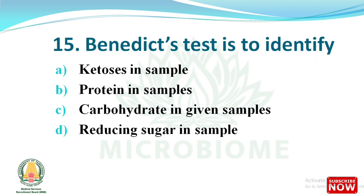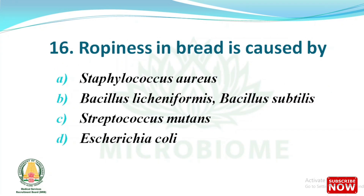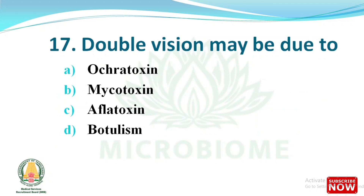Next question: the Benedict test is to identify which of the following in a sample? The options are ketosis, protein, carbohydrate, reducing sugar. The right answer is option D, reducing sugar in the sample. Next question: ropiness in bread is caused by which of the following? The options are Staphylococcus aureus, Bacillus licheniformis and Bacillus subtilis, Streptococcus mutans, Escherichia coli. The right answer is option B, Bacillus licheniformis and Bacillus subtilis.